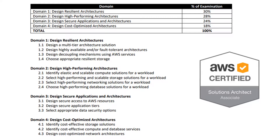Domain three — moving forward — we'll be taking a look at how to design secure applications and architectures. Here we'll look at designing secure access to AWS services, the IAM roles, the policies, designing secure application tiers, and then appropriate data security options.